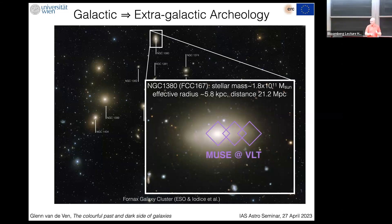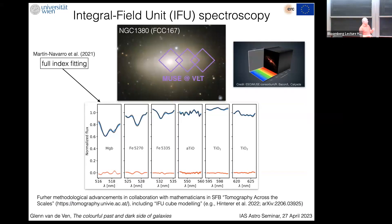These squares show the field of view of the MUSE instrument, which is on the VLT. This is a truly fantastic instrument — it has been a game changer over the last few years. MUSE is a so-called integral field unit: you point it at a galaxy, and at every point you get a spectrum in the optical range. That is an enormous amount of data because every data cube has 90,000 spectra, presenting a significant technological challenge.